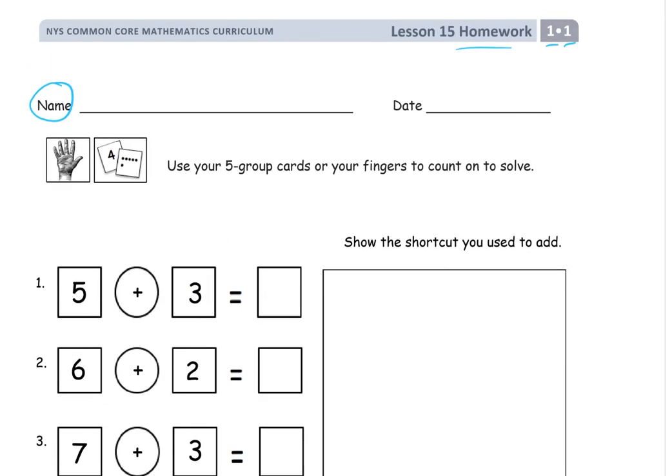One of two strategies. We can either use our five group cards or our fingers. And we're going to draw a picture of it.